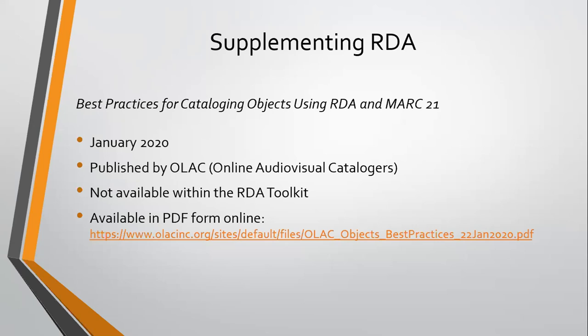We've already seen this in our previous sessions. When we talked about looking outside of RDA to get from holding an item in our hand to having it fully described in a MARC bib record, we saw this for cataloging video and audio recordings with the Music Library Association's best practices. We see it with serials, cartographic materials, rare books and manuscripts, children's literature. And certainly there are best practices for 3D objects. The main one is OLAC's best practices for cataloging objects using RDA and MARC 21.